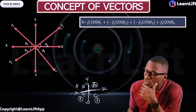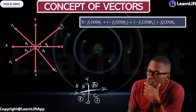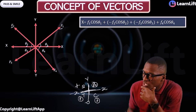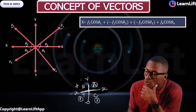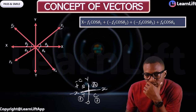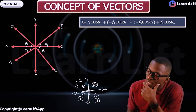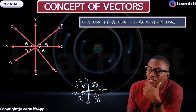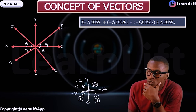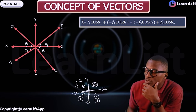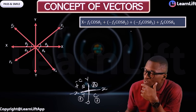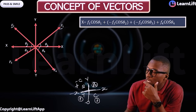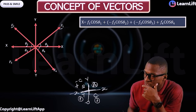In the second quadrant, only sine is positive and cosine is negative, so we get minus F2 cos θ2. In the third quadrant, only tan is positive, so cosine is negative: minus F3 cos θ3. In the fourth quadrant, cosine is positive, so we have plus F4 cos θ4. That is your total horizontal component.